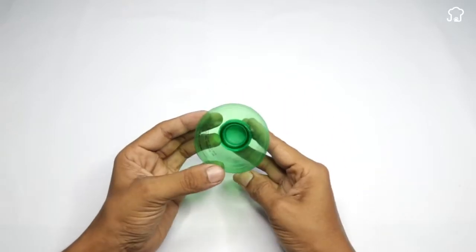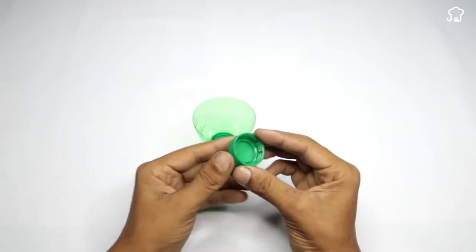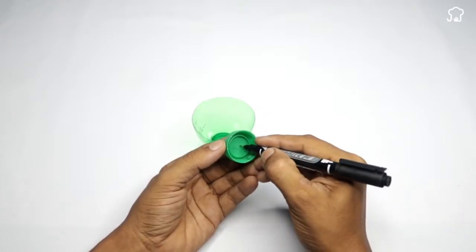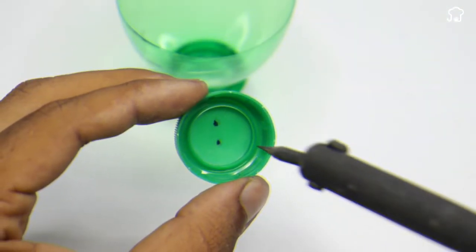Now, we will take the mouth end of the bottle and remove the cap. We will trace two points, and then use the hot soldering iron to make two holes in the points.